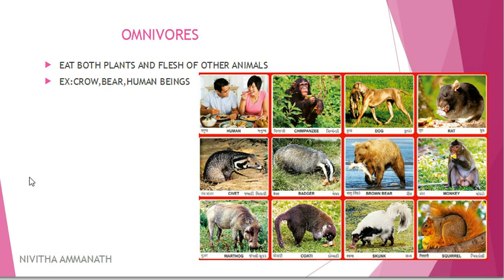Some animals eat both plants and flesh of other animals. Human beings are one of them. Chimpanzee, bear, crow, and human beings — these are omnivores. Omnivores eat both plants and flesh of other animals.